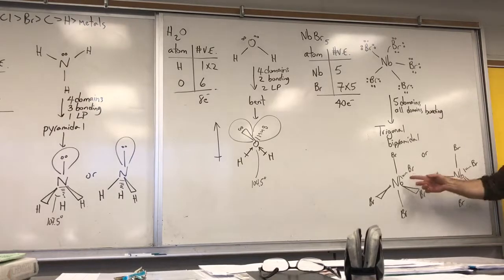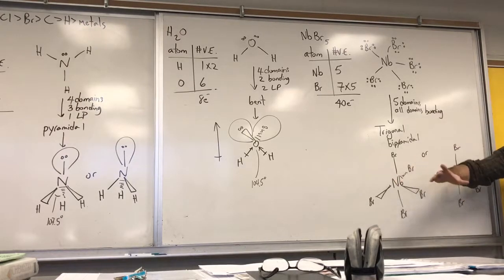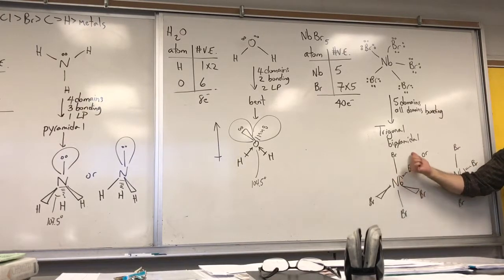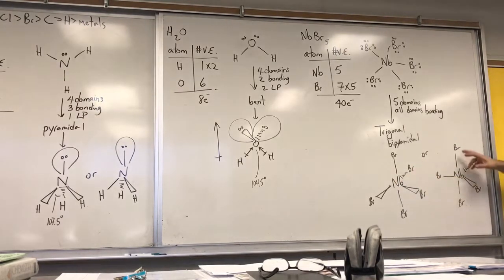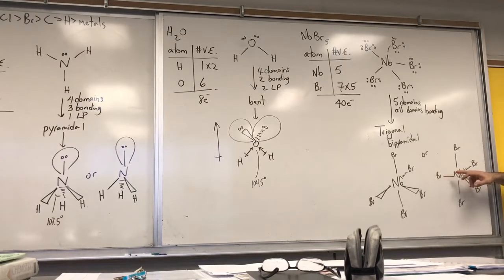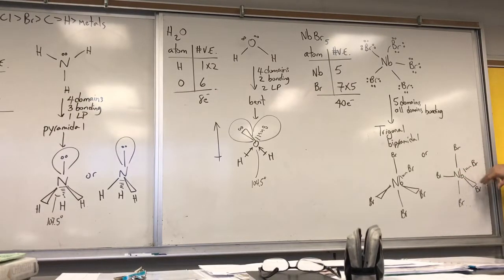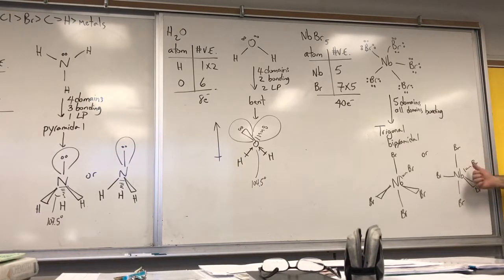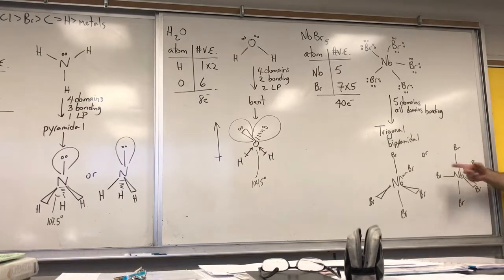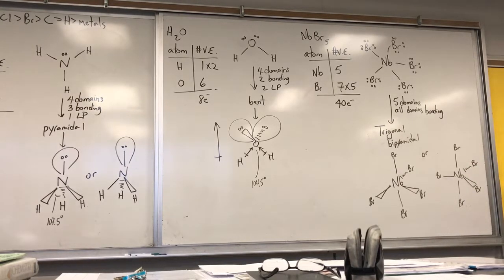You can draw it with two bromines pointing out and one pointing behind, or you can draw it in a way that suggests a T-shape — but it's not a T-shape because the other bromine atoms are present as well, one coming forward and one going back. These two drawings are identical; you're just representing the molecule in slightly different ways.